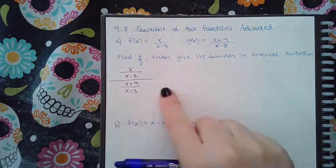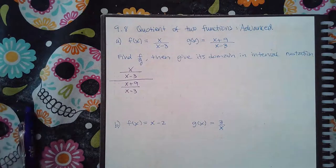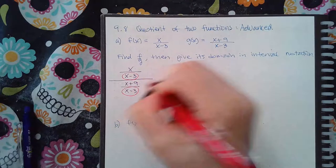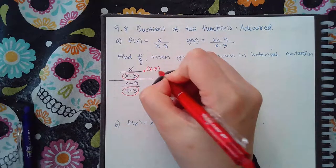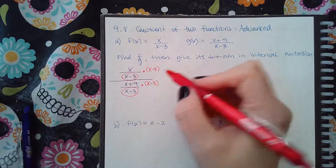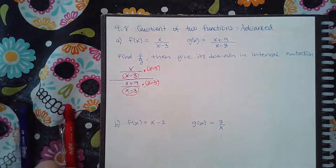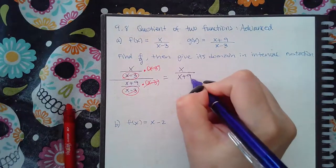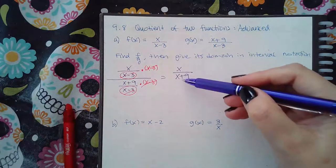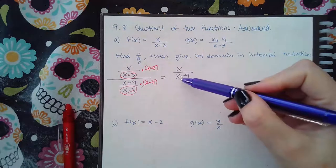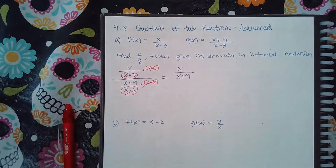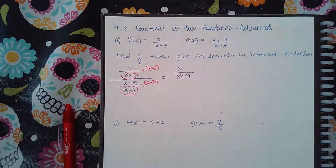We already notice it's a complex fraction — fractions within a giant fraction. The way we simplify those is to multiply by the common denominator. In this case, both denominators are x−3, so the common denominator is x−3. When I multiply, it cancels in the numerator and in the denominator, leaving the expression x over (x+9). These x's cannot be canceled because they are not factors; they are terms. The denominator is not a factor at all — it is only a term.